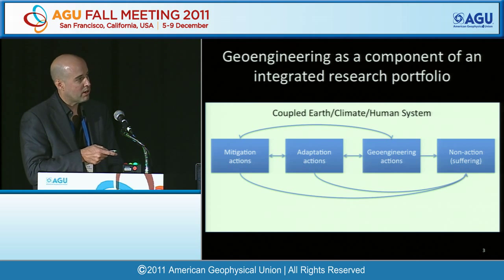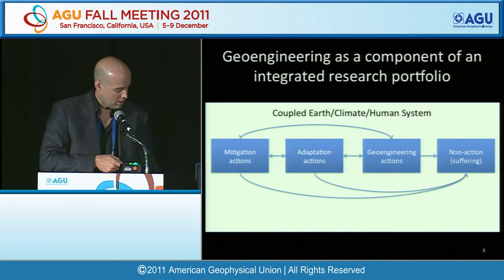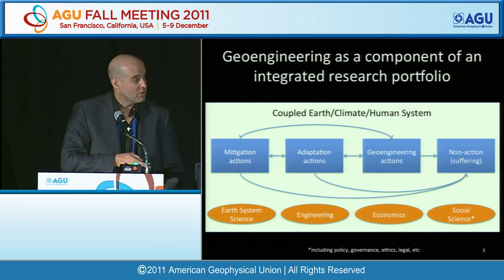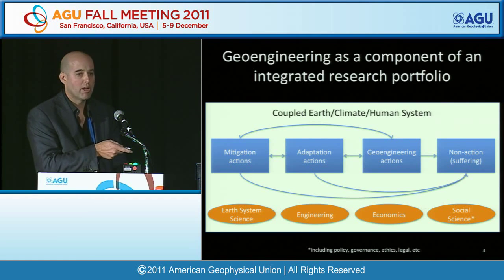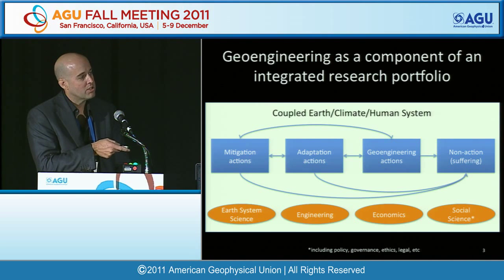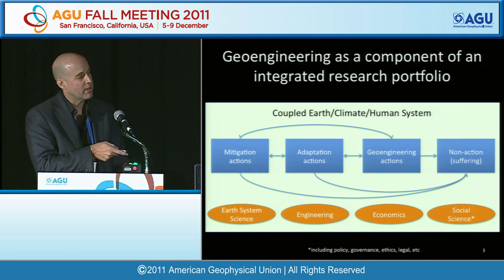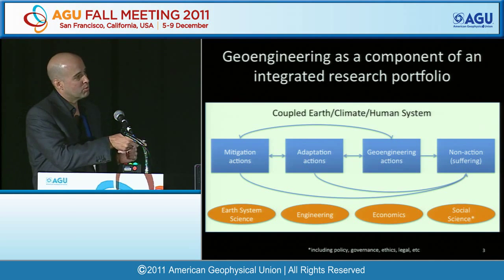When we talk about doing research on geoengineering, that's a very narrow view. Really what we're after is the proper place for geoengineering in the broader research continuum. Research takes forms not just in Earth-system science, but also engineering — including control systems engineering — plus economics, social sciences, and that's a big bag including policy, governance, ethics, and legal considerations. All of these are poles of research programs.